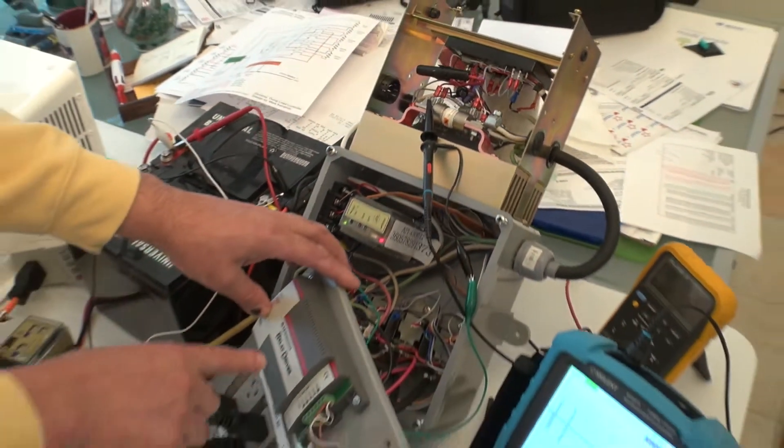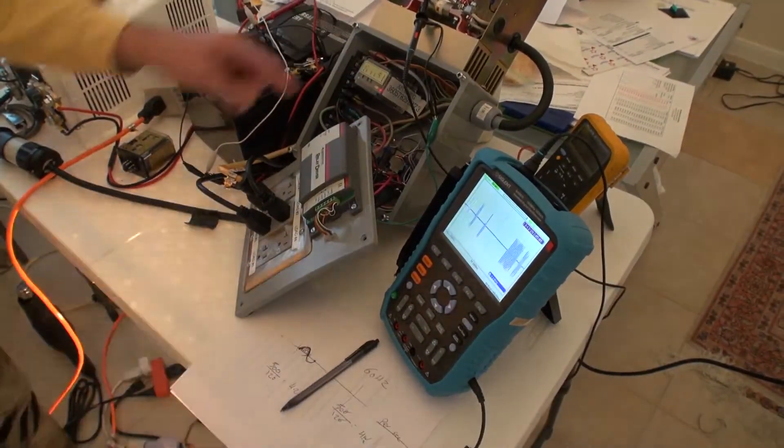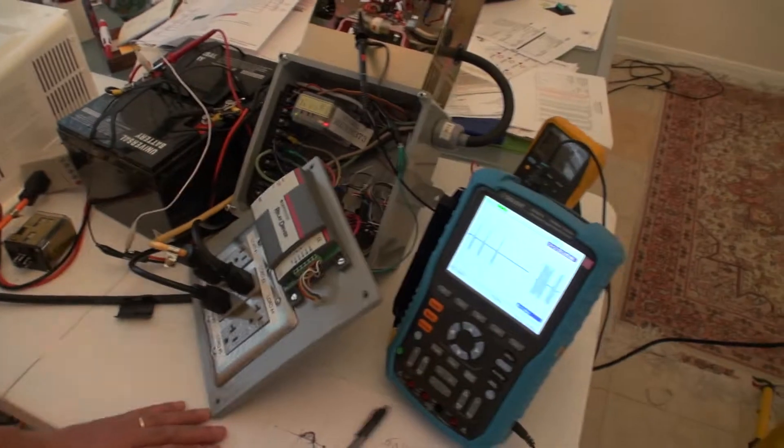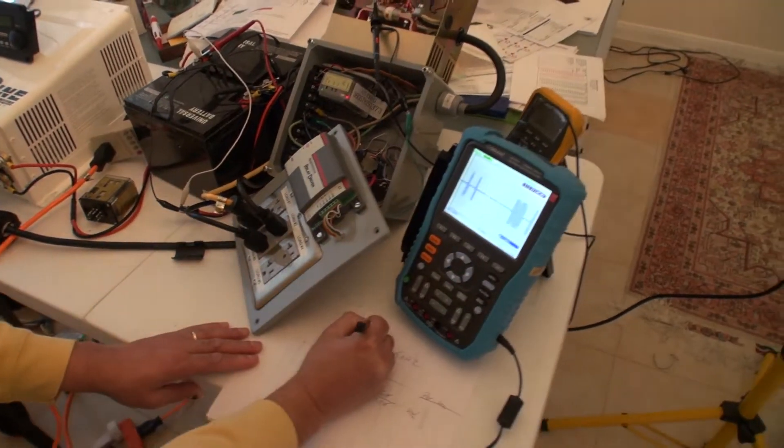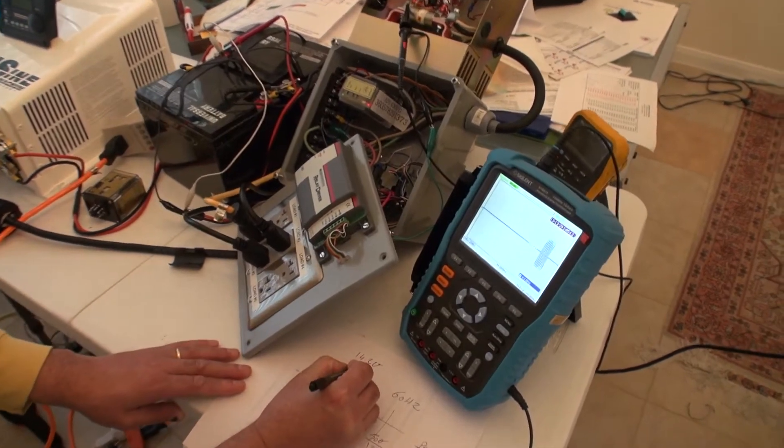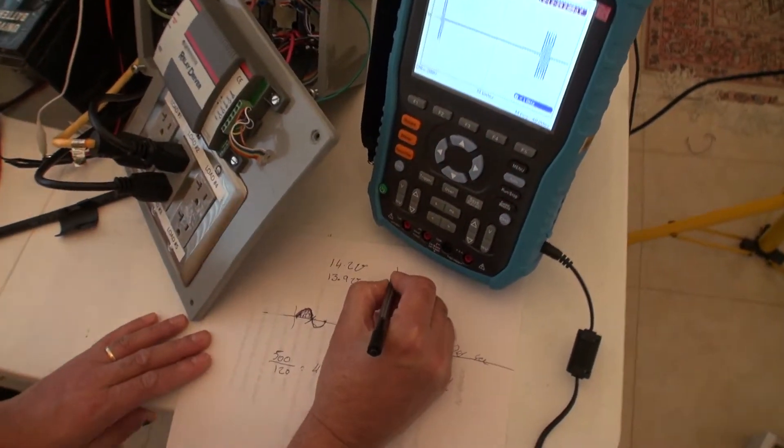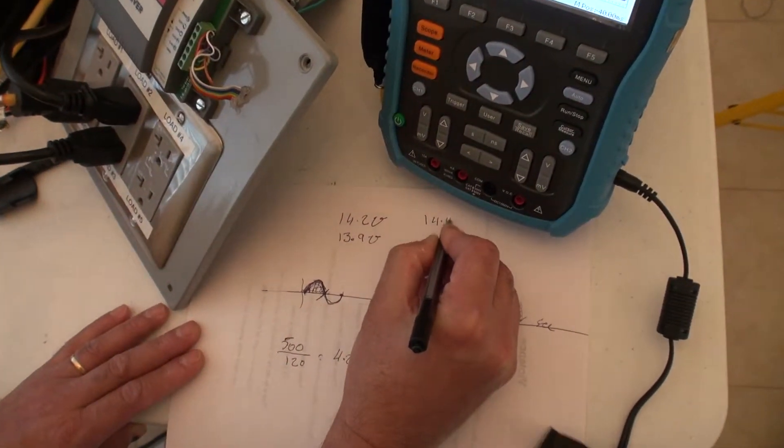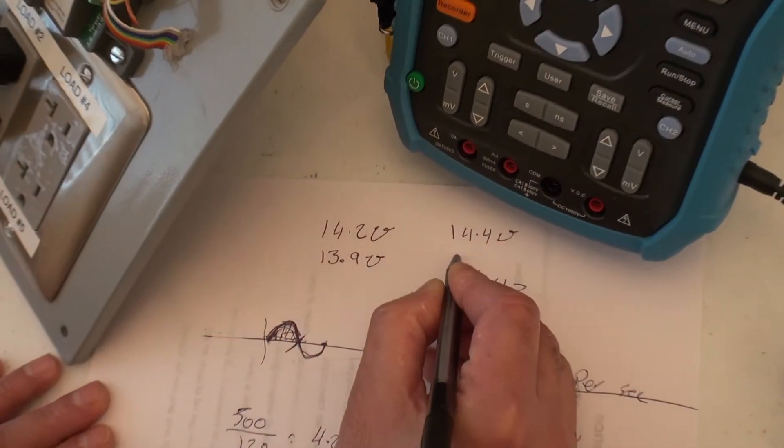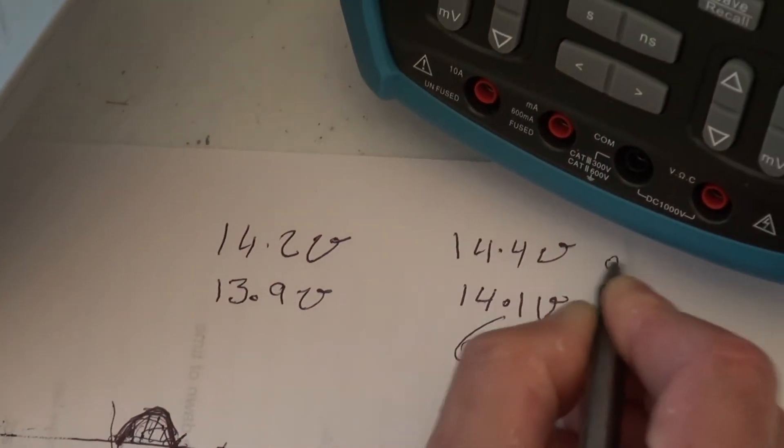The other four relays are controlled with this relay controller that I programmed. The first one is going to come on at 14.2 volts and it will go off when the voltage reaches 13.9 volts. The second relay is going to come on at 14.4 volts and it will go off when the voltage gets to 14.1 volts.